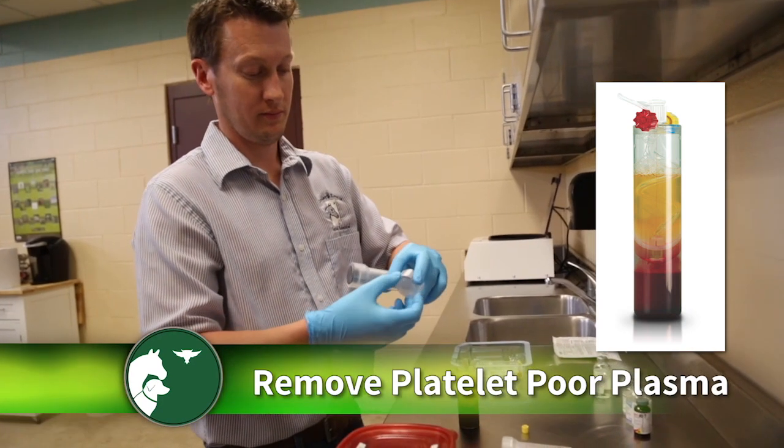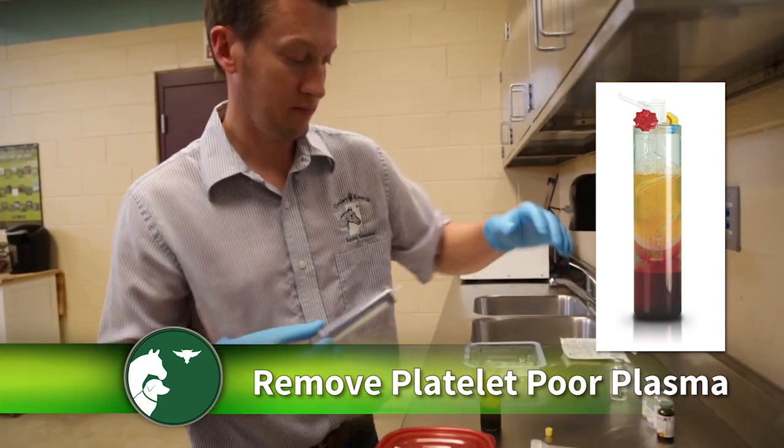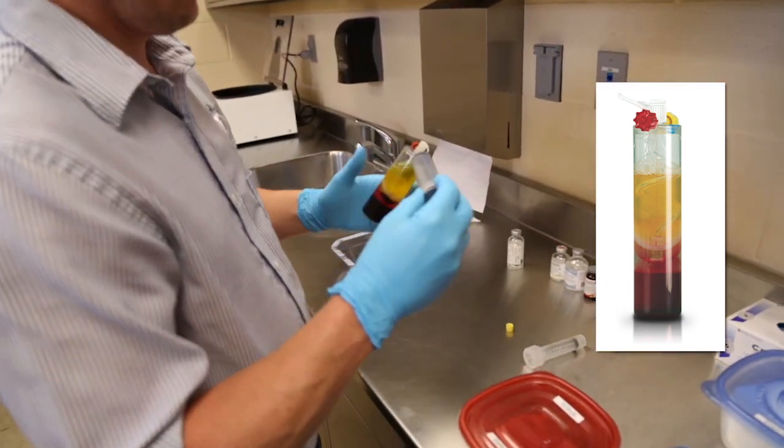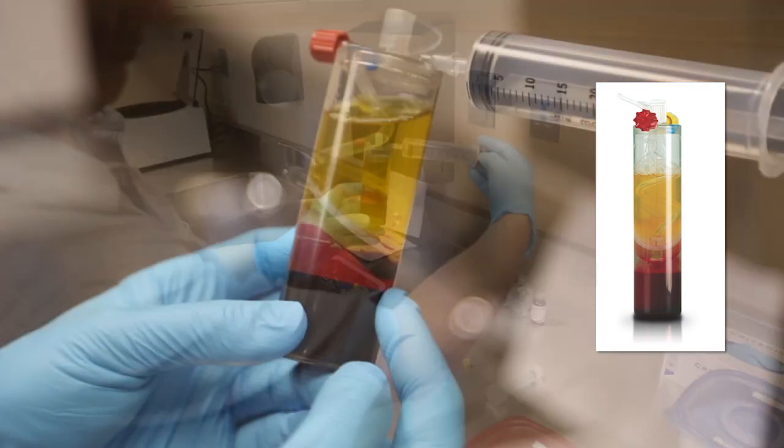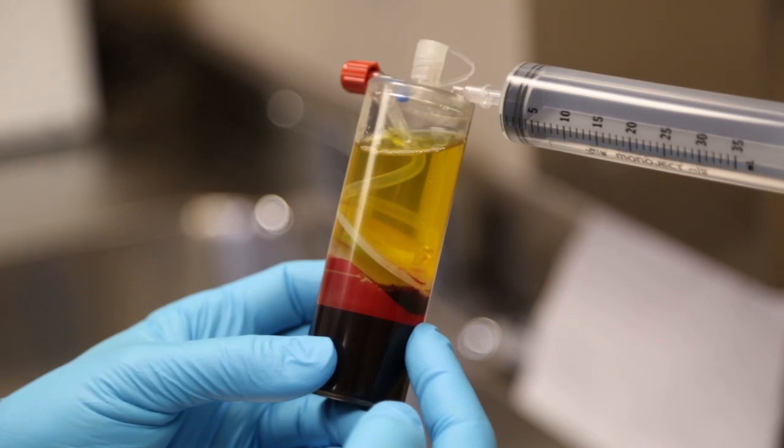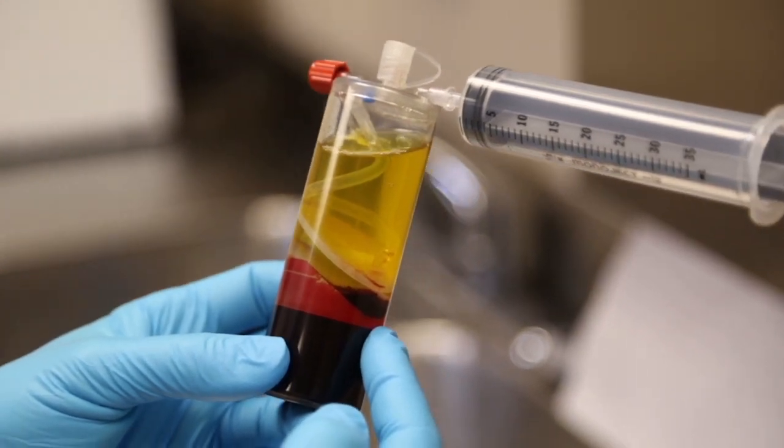Remove the platelet poor plasma first. This is recommended to ensure that the platelet-rich cell suspension is not diluted at the time it is being drawn out of the device. Remove the yellow cap from the device, labeled number 2, and connect a 30 ml syringe to remove the platelet poor plasma.